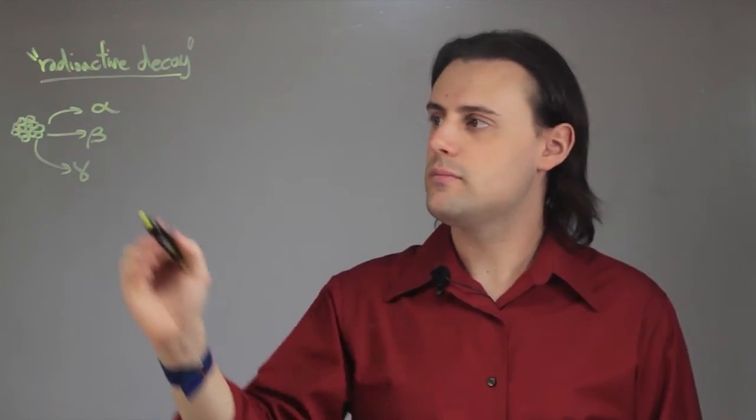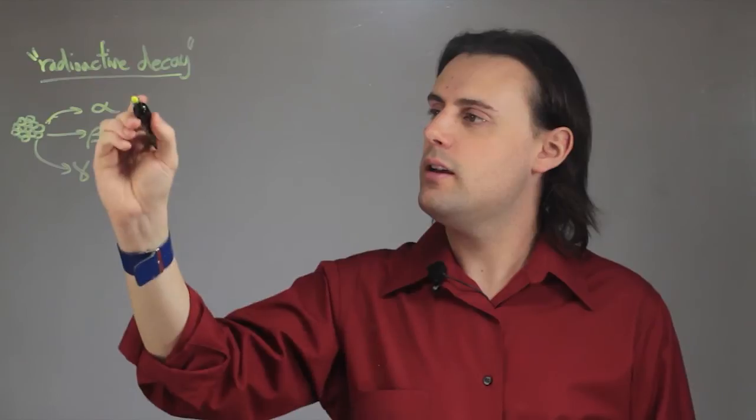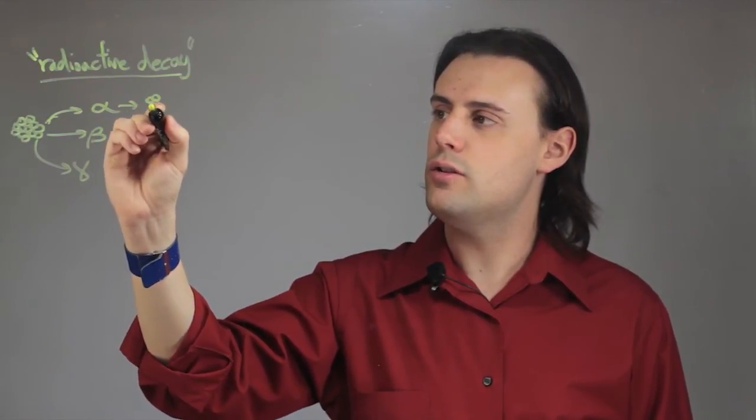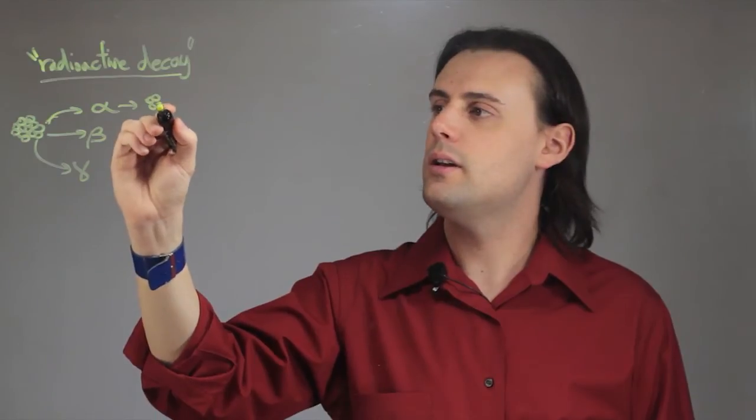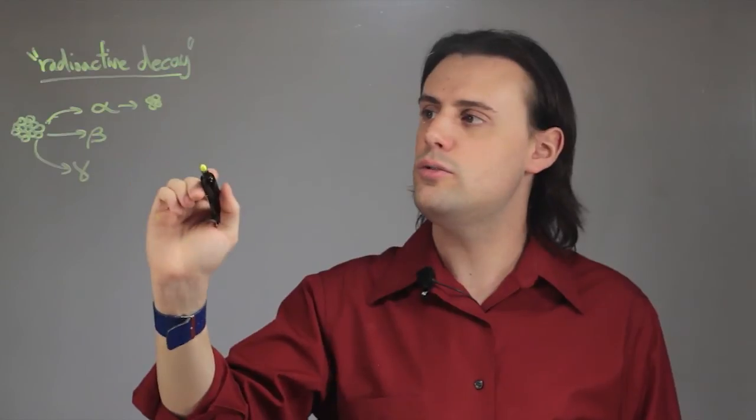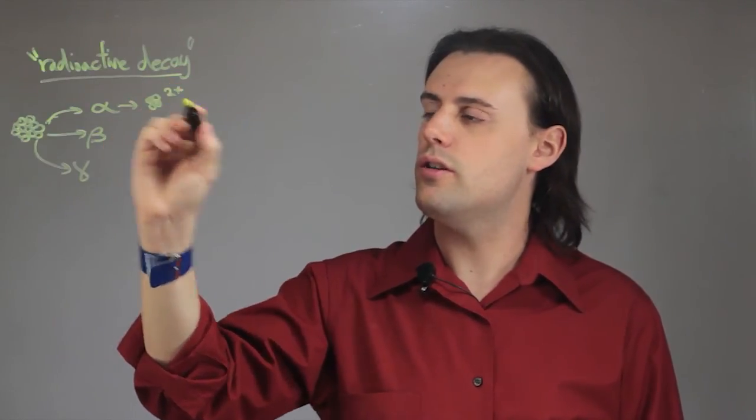Alpha radiation, which comes from alpha decay, is comprised of essentially the nucleus of a helium atom. It is a charged particle that contains two protons and two neutrons, and it has a charge of plus two.